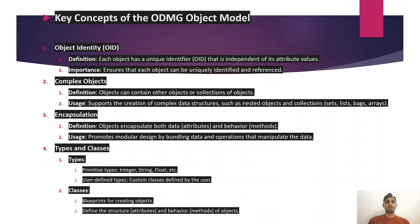Key concepts of the ODMG Object Model: First, Object Identity — each object has a unique identifier that is independent of its attribute values, ensuring each object can be uniquely identified and referenced. Second, Complex objects — objects can contain other objects or collections of objects, supporting complex data structures such as nested objects and collections including sets, lists, bags, and arrays.